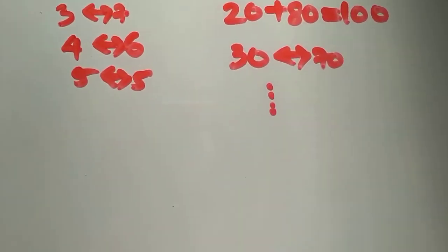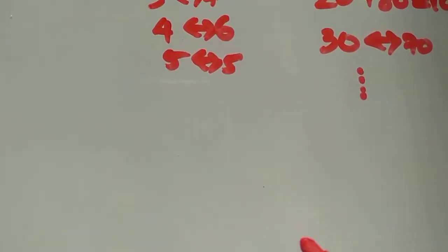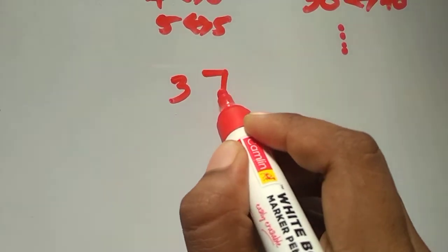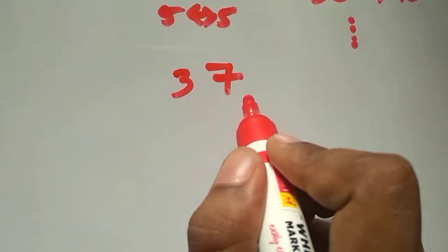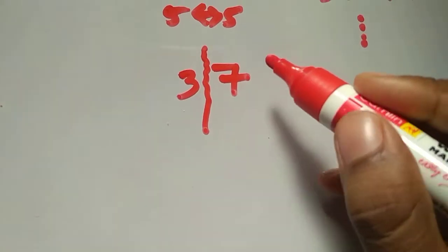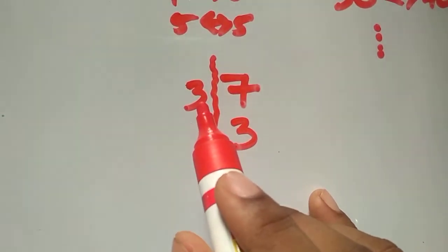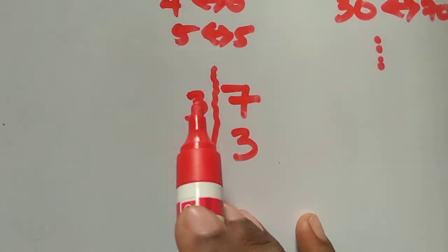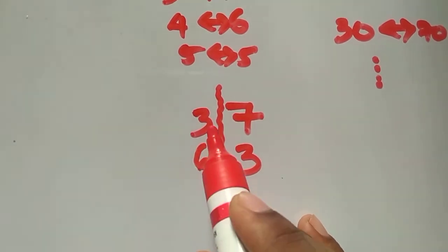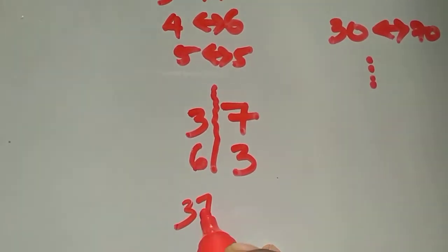We will go deep into that and try a new method to find the complement of a number with respect to 100. For example, take 37. To find 37's complement for 100, divide it into two digits: 3 and 7. Find the 10's complement of 7, which is 3. Then find the number which when added to 3 gives 9 — that is 6. So the complement of 37 is 63.